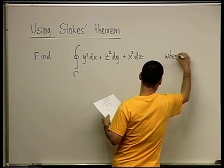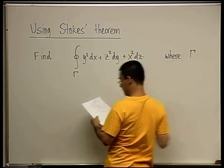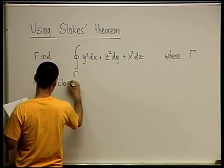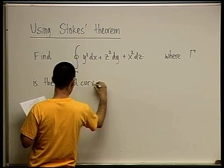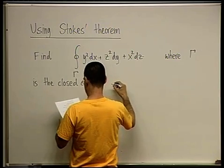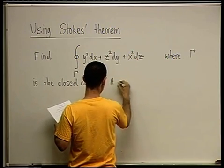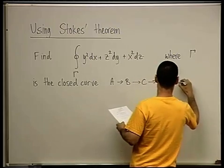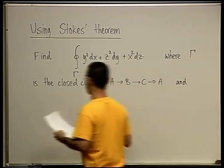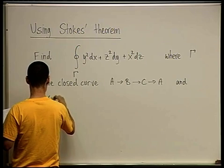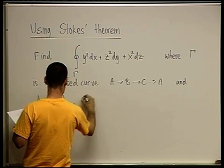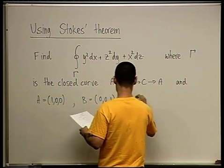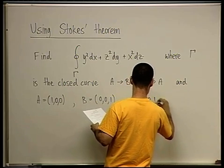Gamma is the closed curve A, B, C, and back to A, where A is the point (1,0,0), B is the point (0,0,1), and C is the point (0,1,0).